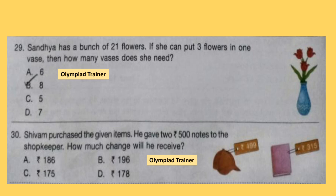Question 30. Shivam purchased the given items and gave 2 rupee 500 notes to the shopkeeper. How much change will he receive? Two 500-rupee notes means Rs. 1000. He purchased 2 items with price tags of Rs. 499 and Rs. 315. Add them first, then subtract from 1000. The amount left will be Rs. 186, so option A is the correct answer.